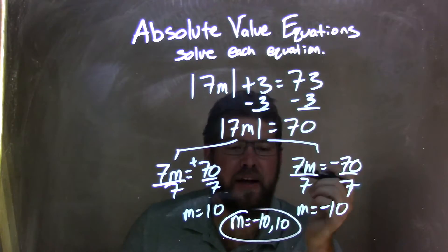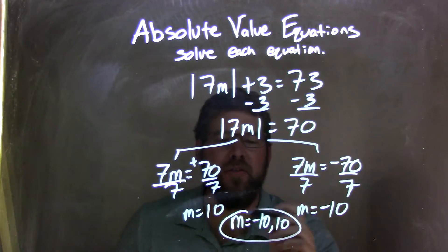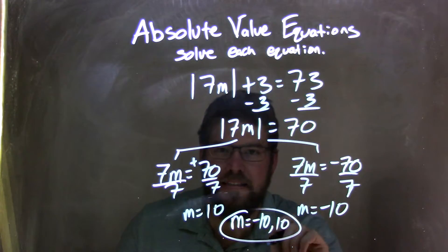So to write it nice and neat, my final answer is from least to greatest. So my answer is m equals negative 10 and positive 10.